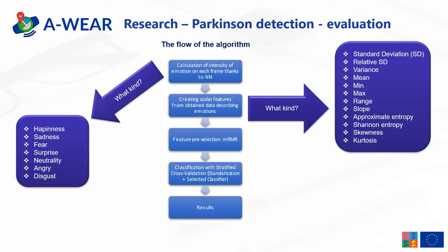This slide shows an extension of the flow of the algorithm and the machine learning methodology used. The steps connected to emotion extraction involve calculation of the intensity of emotion on each frame using neural networks. There were exactly seven emotions: happiness, sadness, fear, surprise, neutrality, anger, and disgust. In the next step, scalar parameters were computed, including standard deviation, relative standard deviation, variance, mean, minimum, maximum, range, slope, and features computed based on the distribution of data — kurtosis and skewness.